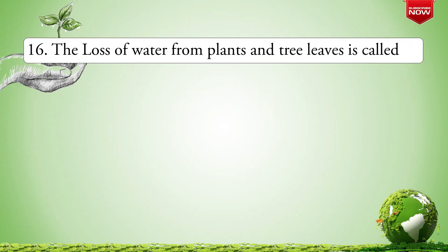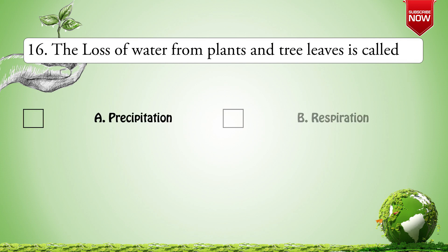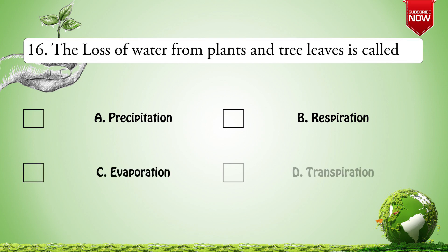Next question: The loss of water from plant and tree leaves is called — Options are: A. Precipitation; B. Respiration; C. Evaporation; D. Transpiration. The correct answer is D: Transpiration.